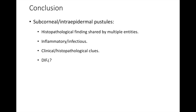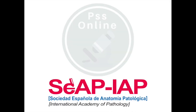In conclusion, subcorneal and/or intraepidermal pustules are a histopathological finding shared by multiple entities, both inflammatory and infectious. We have to take into account that there are clinical and histopathological clues that may aid in the diagnosis, as well as direct immunofluorescence, which is quite important and provides the diagnosis of IgA pemphigus in cases of positivity. I hope you enjoyed these two cases and found it helpful to go through this differential diagnosis. Thank you very much. Bye bye.